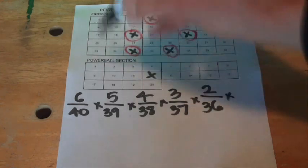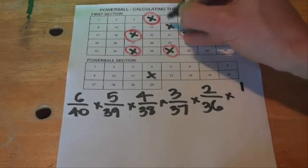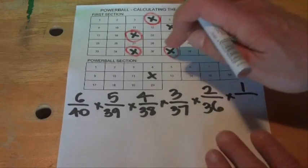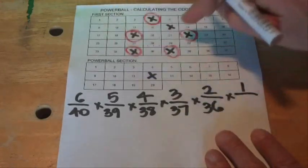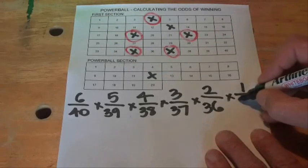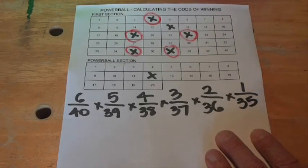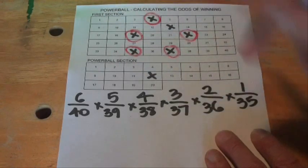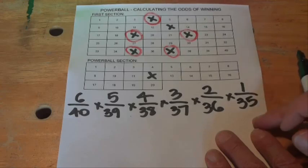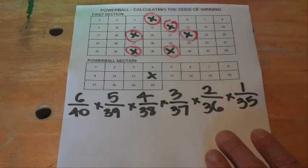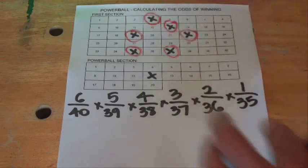And when the last number comes down, we've got one number left out of - and there were 40 numbers in the drum, and now one, two, three, four, five have come out, so there's 35 numbers left in the drum. So our last ball that comes down, we've got one chance in 35 that that number is on our grid, one of the numbers we've selected.